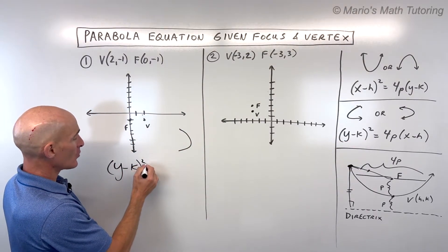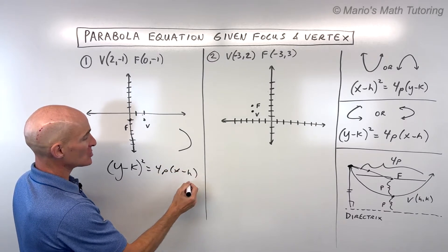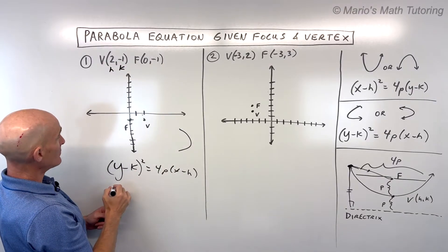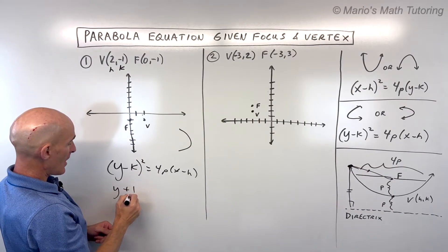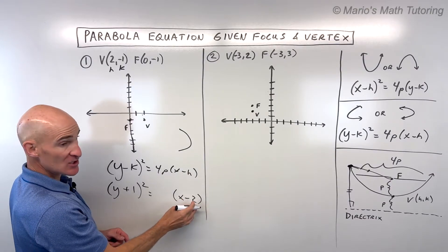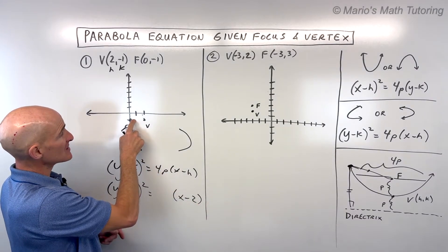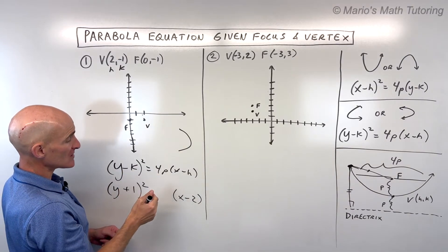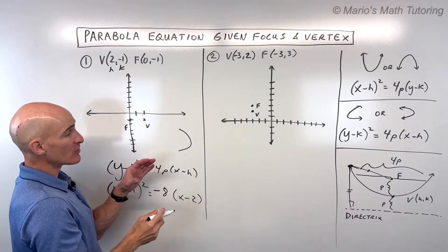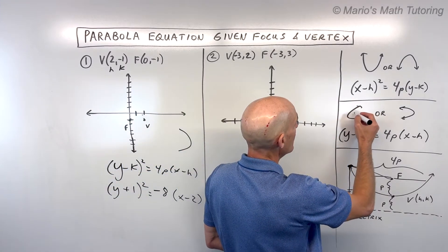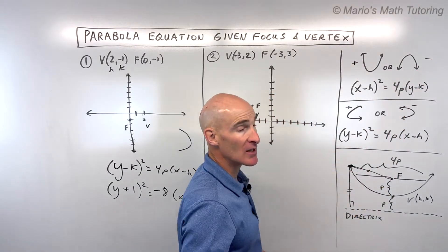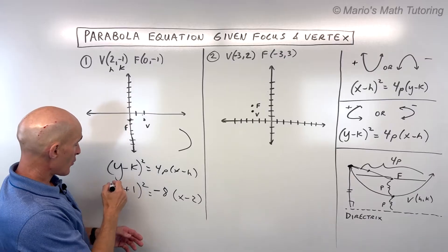We've got y minus k squared equals 4p times x minus h. The h and k are the coordinates of the vertex. So it's going to be y minus negative 1, which is y plus 1, squared equals 4p times x minus h, where h is 2. And 4 times p, which is 2, gives us 8. When it opens to the left, this is going to be negative. Opening right is positive, left is negative, up is positive, down is negative. So this is our equation.